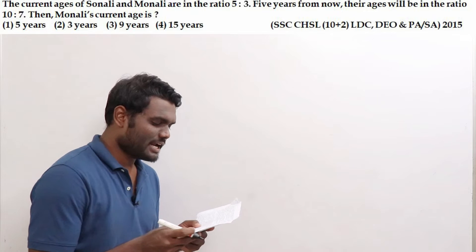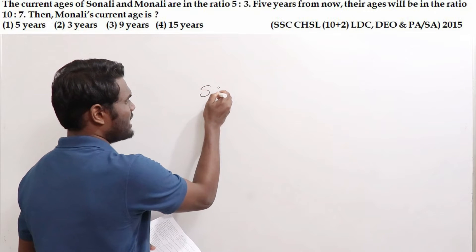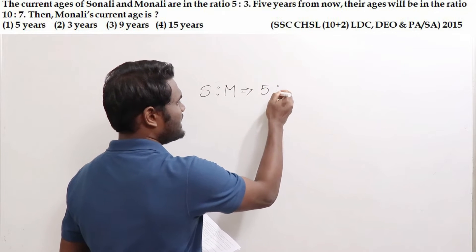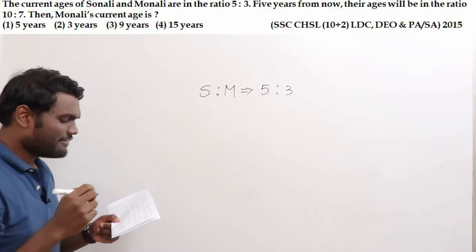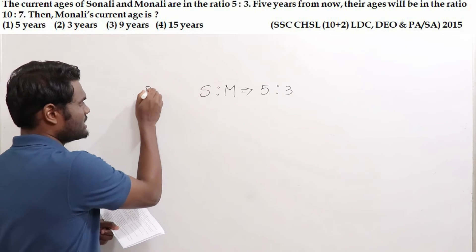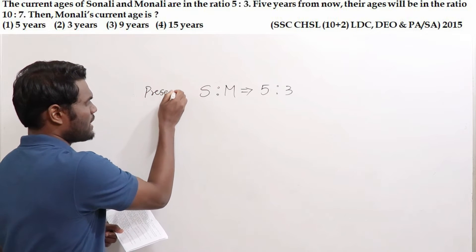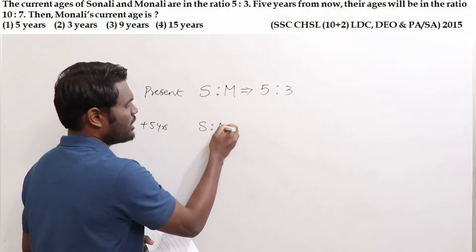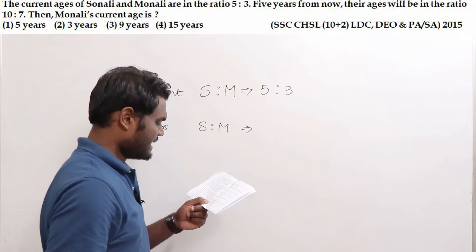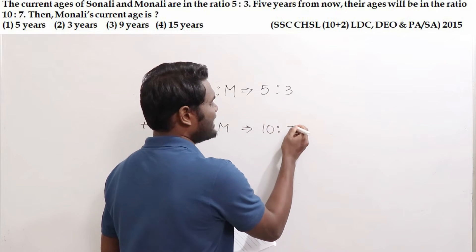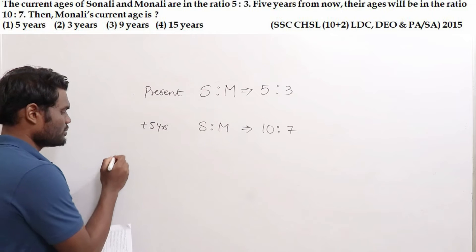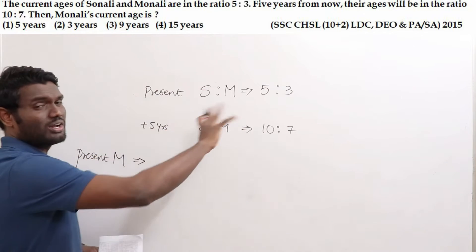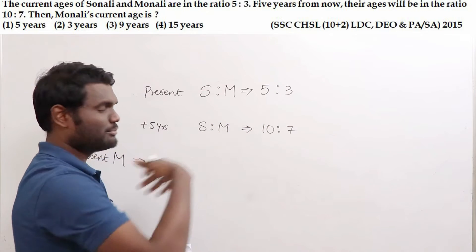Let us look at one more question. Current ages of Sonali and Monali are in the ratio 5:3. After 5 years, the ratio of Sonali to Monali will be 10:7. We are asked to find what is Monali's present age.